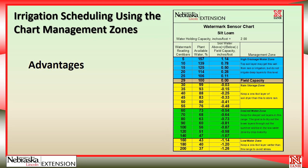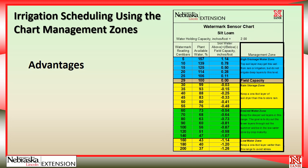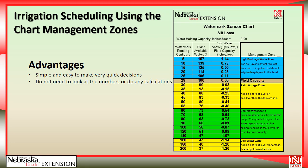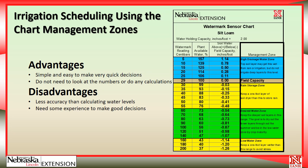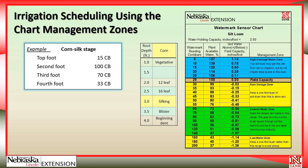The first method we're going to talk about is irrigation scheduling using the chart management zones, shown on the right-hand side of the chart. It has advantages in that it's simple and easy to make quick decisions — you do not need to look at the numbers or do any calculations. The disadvantage is it's less accurate than calculating the water levels, and you need some experience to make good irrigation scheduling decisions.